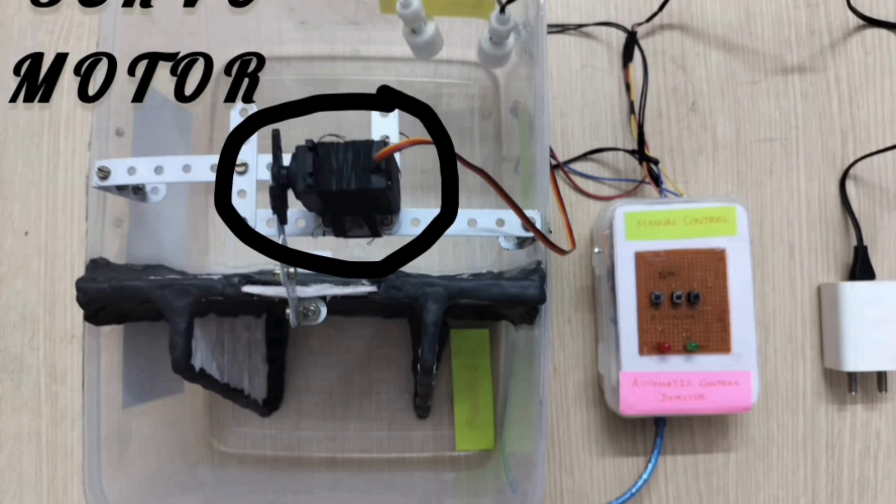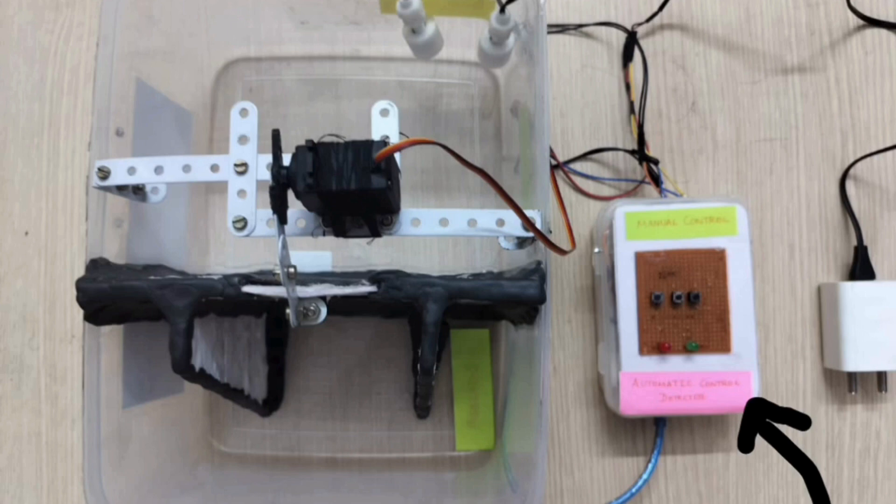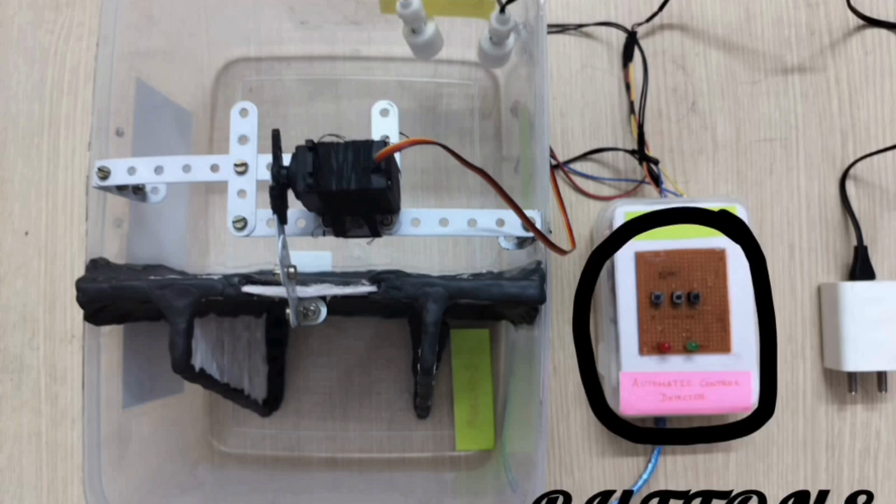Server motor is connected to the shutter for opening and closing of it. And Arduino is in the box which is the microcontroller. Also a few buttons and LEDs to indicate when the signal from the sensors are received.